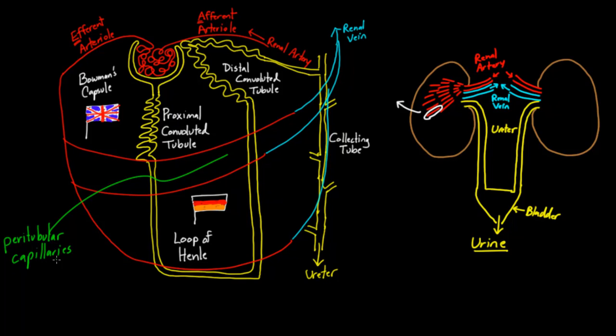Now you can see the renal artery blood coming in, going in through the afferent arteriole, then the efferent arteriole, and then draining back into the peritubular capillaries, and finally the renal vein.